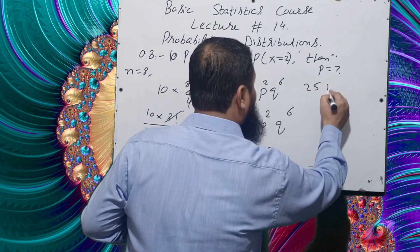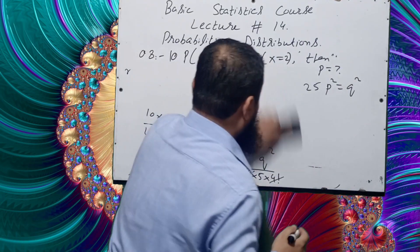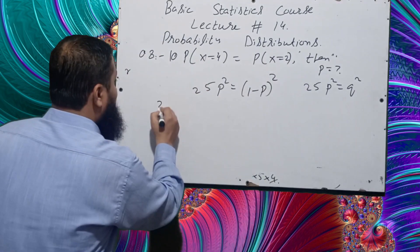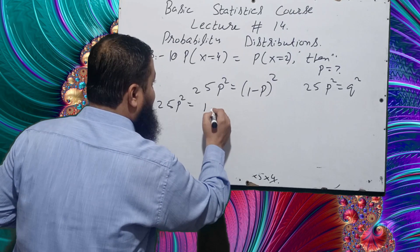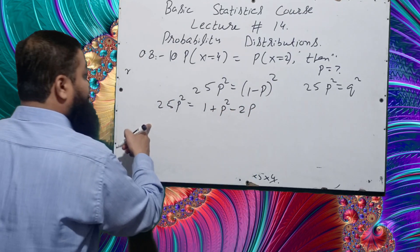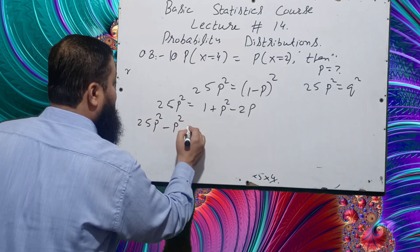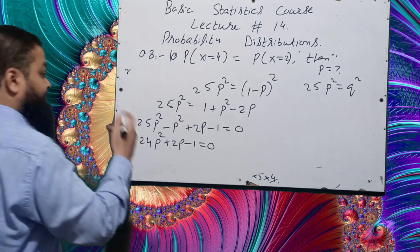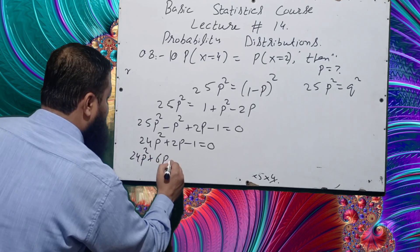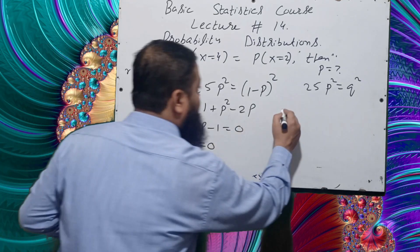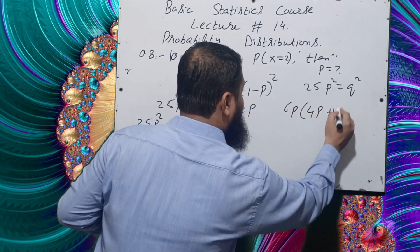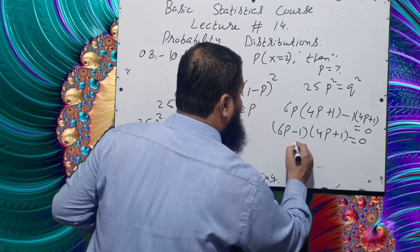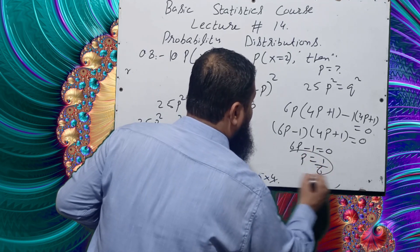So 25P² = Q² = (1 − P)². Expanding: 25P² = 1 − 2P + P². Rearranging: 25P² − P² + 2P − 1 = 0, giving 24P² + 2P − 1 = 0. Factorizing: 24P² + 6P − 4P − 1 = 0, so 6P(4P + 1) − 1(4P + 1) = 0, meaning (6P − 1)(4P + 1) = 0. Therefore P = 1/6 is the correct answer in the exam.